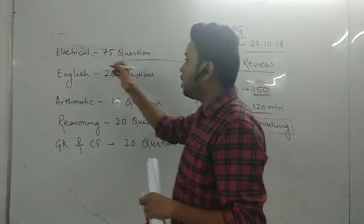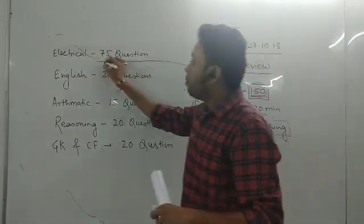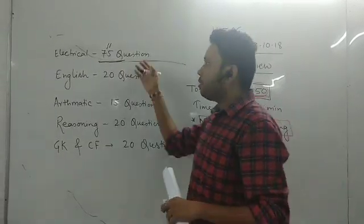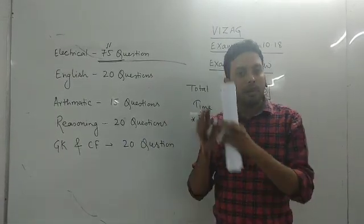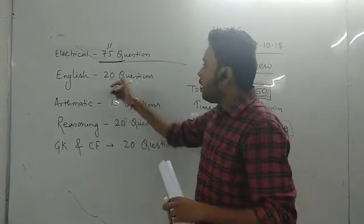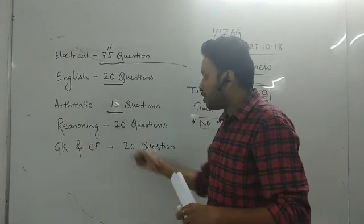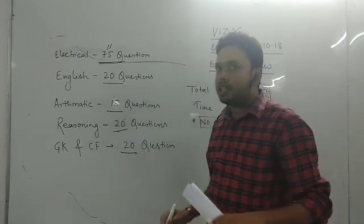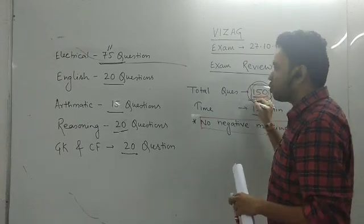In this total, 150 questions are in this exam. 75 questions are electrical — electrical means diploma level. In English, 20 questions are English. Mathematics, 20 questions. Reasoning, 20 questions. This is the total question distribution, making a total of 150 questions.